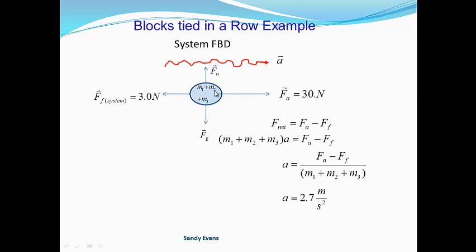Here's the system: I've combined all the masses together and combined all the friction, normal force, and force of gravity, so it simplifies it. Our F-net is our system mass, and it's the sum of all forces. I've defined going to the right as positive, so it will be the applied force F_A subtracting off the friction of the whole system. Then I isolate for acceleration and plug in my values.